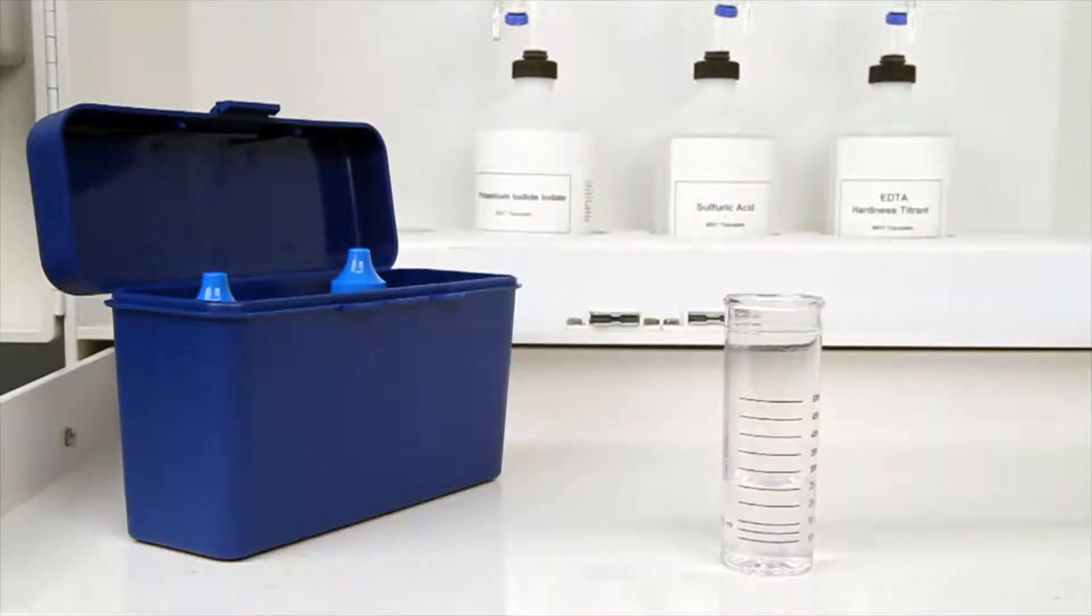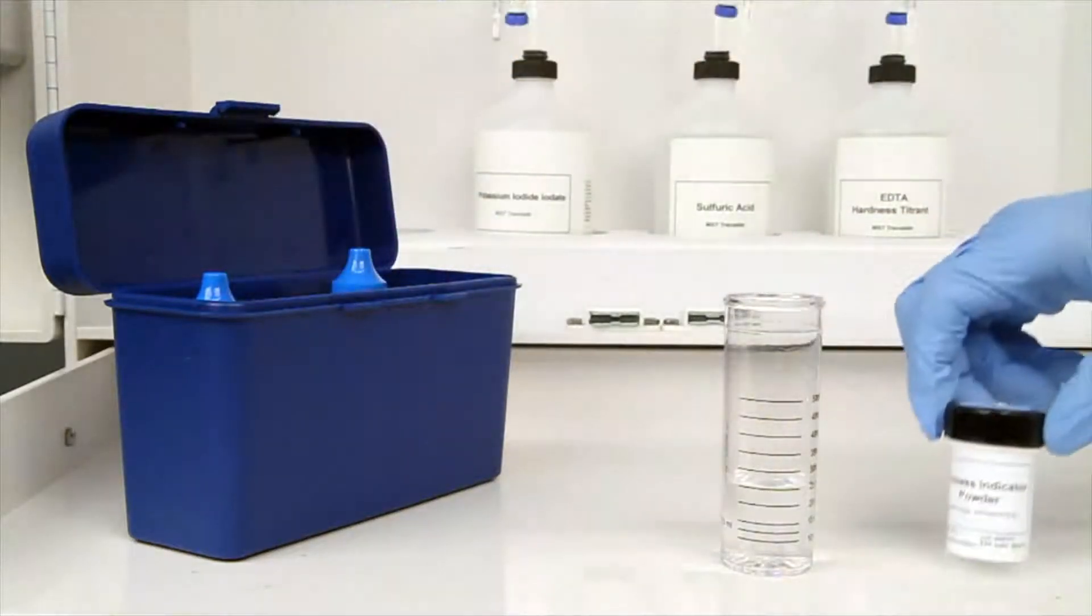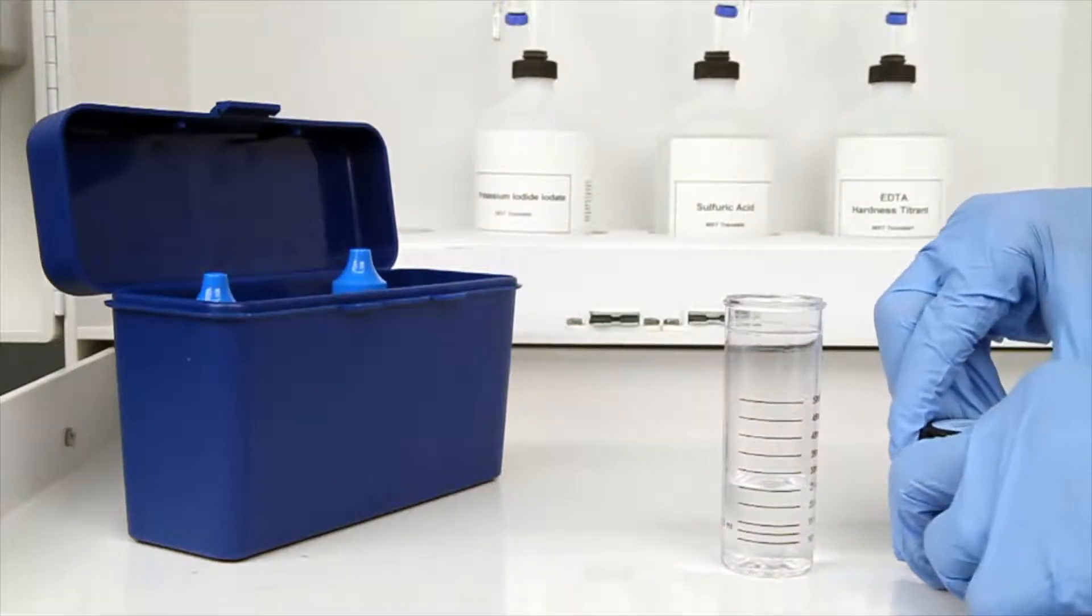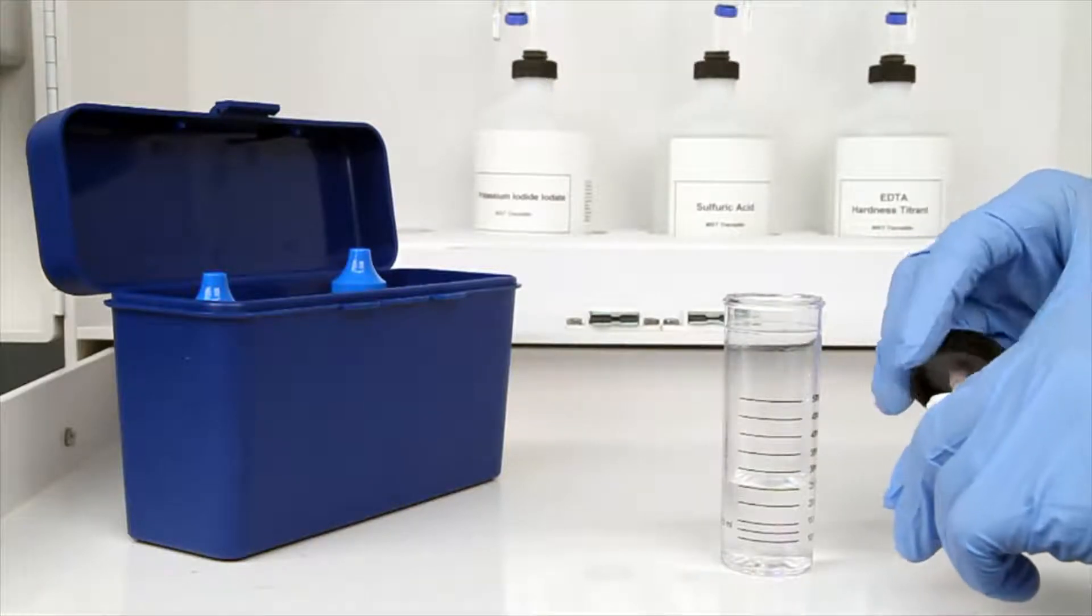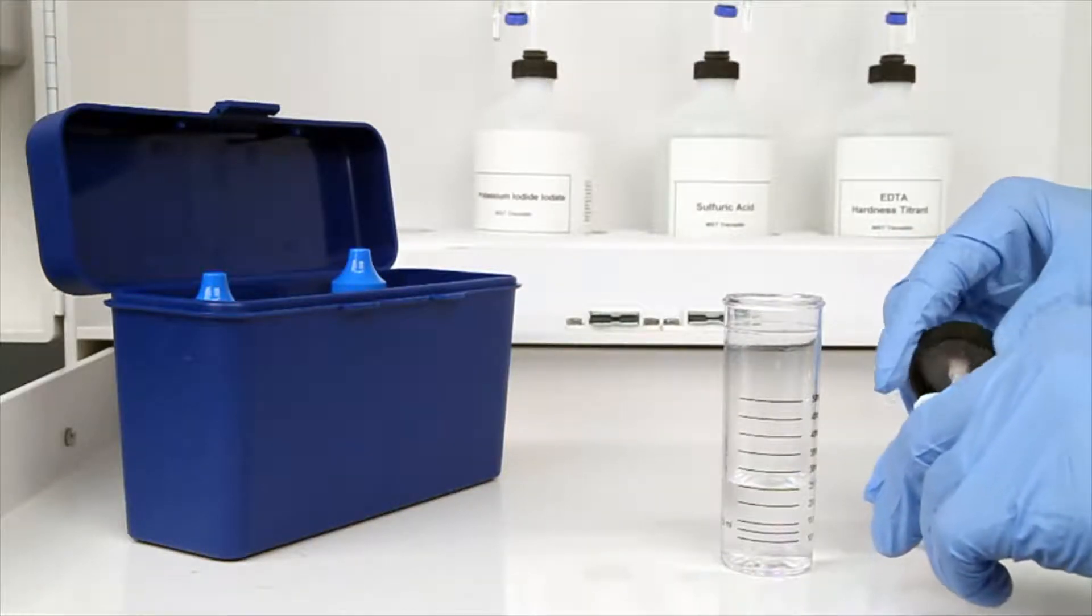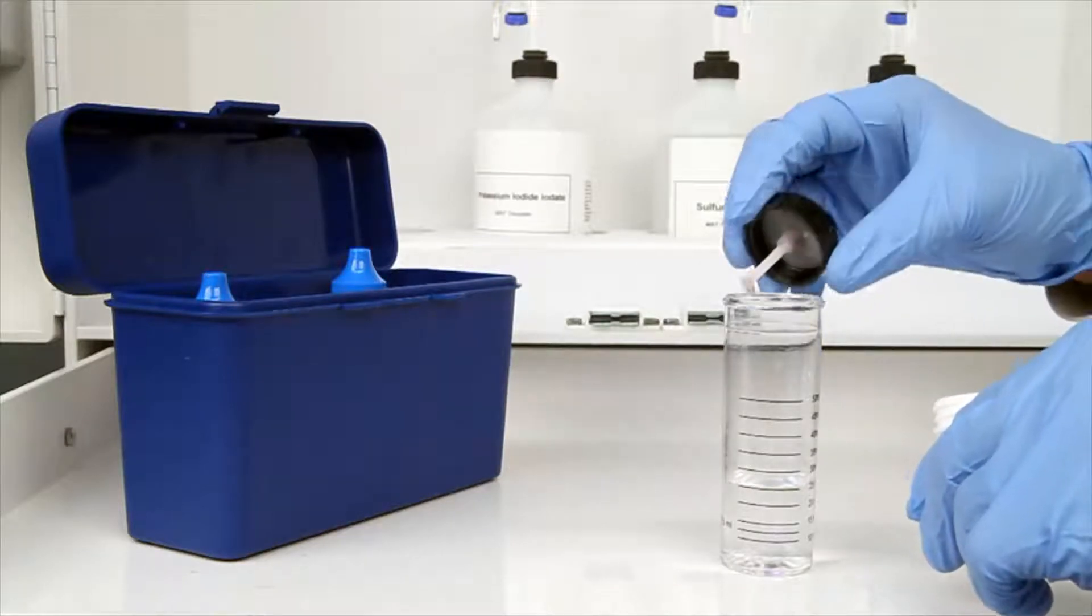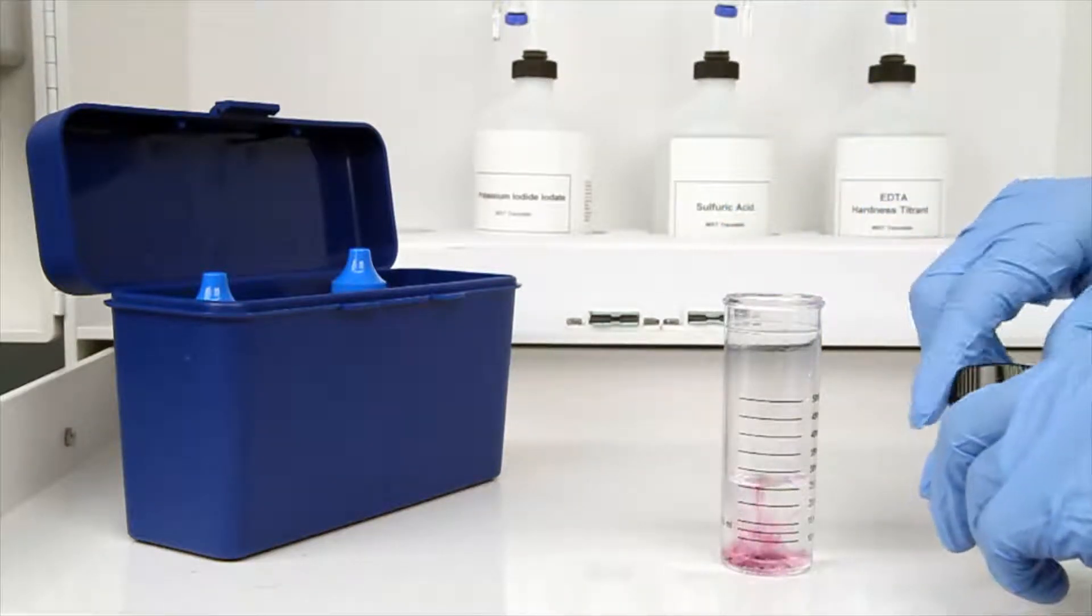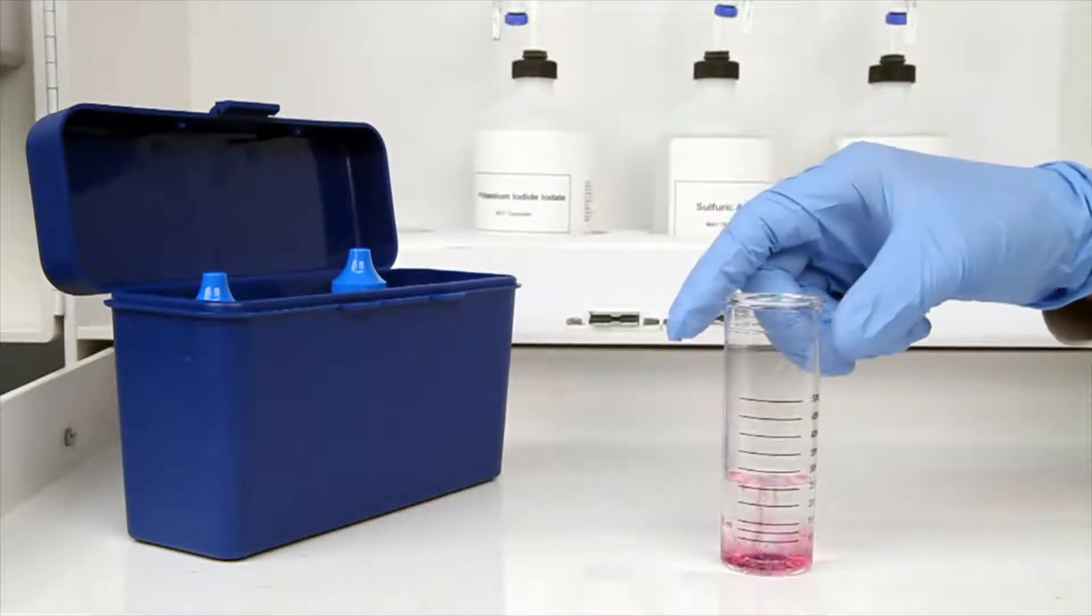The next step according to the Endpoint ID procedure is to add one scoop of hardness indicator powder. After the addition of the powder, swirl the vial to ensure the powder is completely dissolved. In this case, the sample is turned red, indicating that hardness is present.